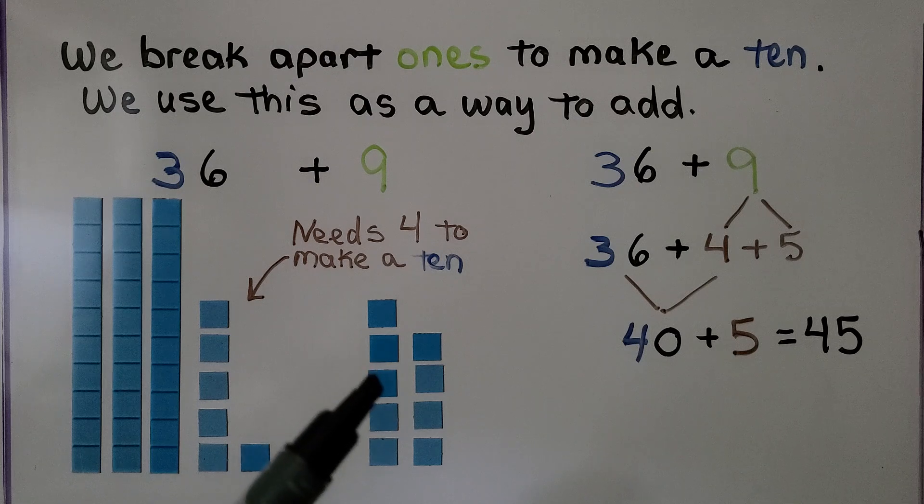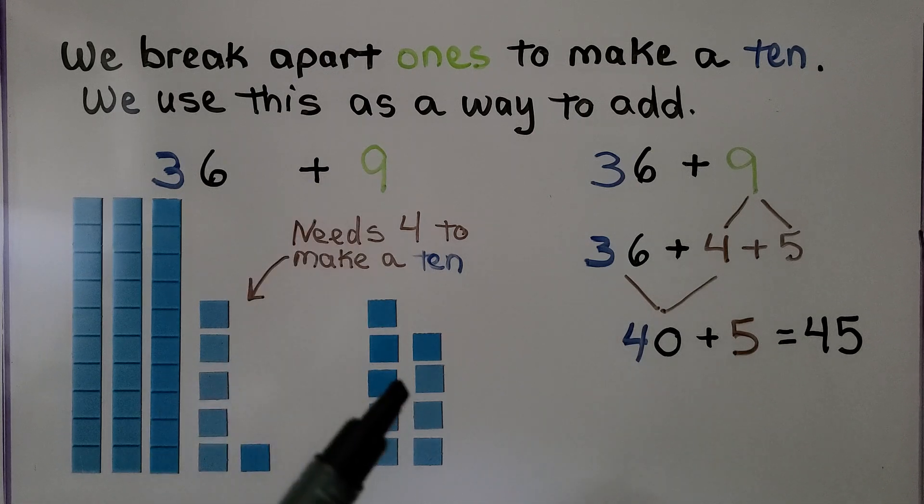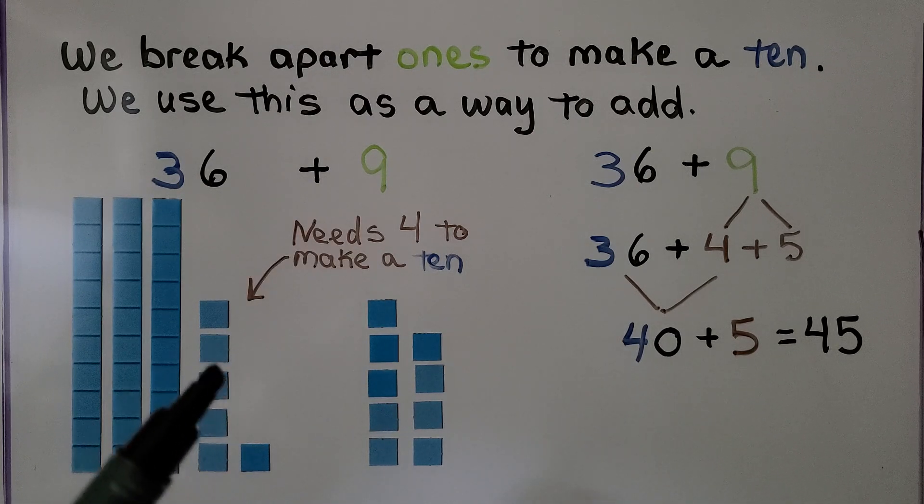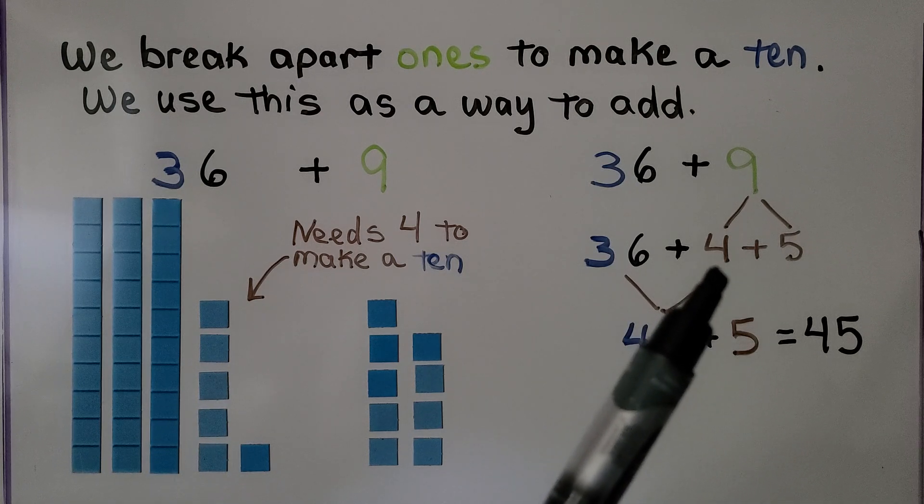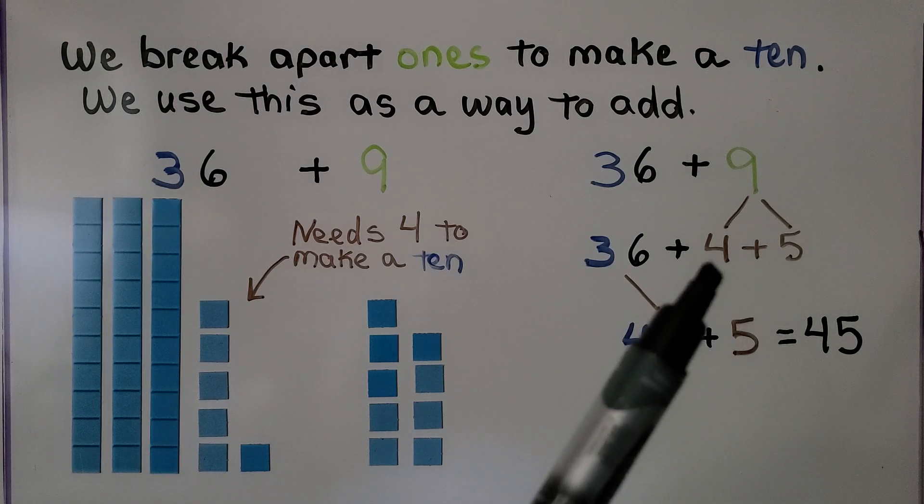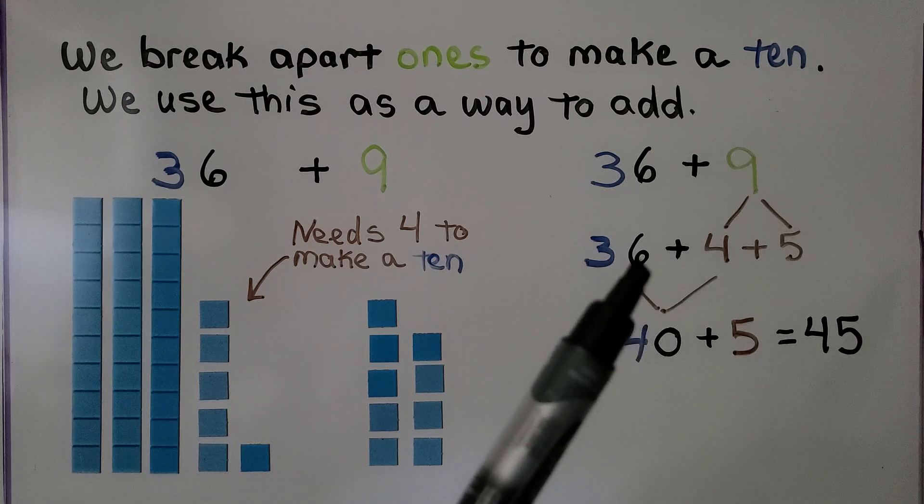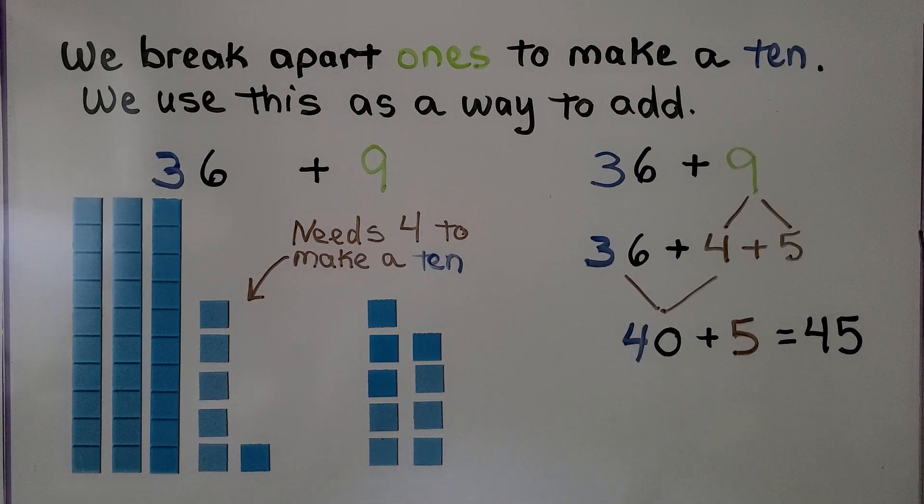We can take 4 from here, from the 9, and give it to the 6 to make a ten. Now we have 4 tens. We break the 9 into a 4 plus 5. When we give the 4 to the 6 and make a ten, now we have 4 tens.